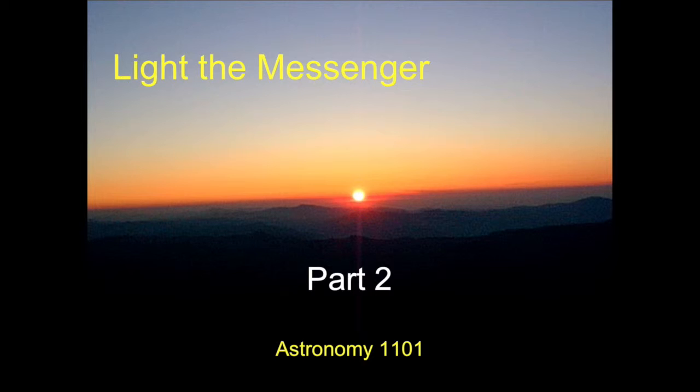Welcome back. In the first part of this lecture, we introduced the idea that light, everything we can see in visible light, as well as radio all the way up to gamma rays, can be thought of as electromagnetic radiation in the form of electromagnetic waves. Changing electric and magnetic fields propagating along at the speed of light. We showed how electromagnetic waves have many similar properties to water waves and sound waves, and introduced the ideas of wavelength, frequency, and amplitude of light.